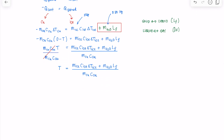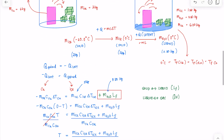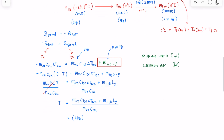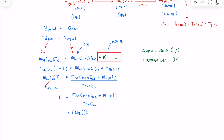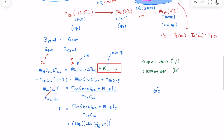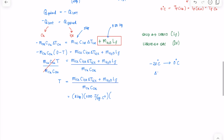Now we simply substitute the values. The mass of the ice is 2 kilograms — the entire block that gains heat from the copper. The specific heat of ice is 2,100 joules per kilogram per Celsius degree. The change in temperature of the ice is from negative 20 degrees Celsius to 0 degrees Celsius, so ∆T = 0 − (−20) = positive 20 Celsius degrees.